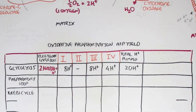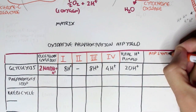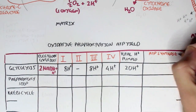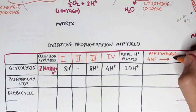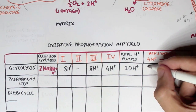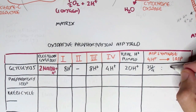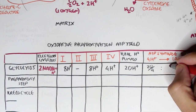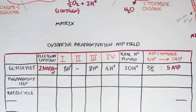So now we have 20 hydrogen ions in the intermembrane space from two NADHs, the electron carriers. If we put this through the ATP synthase, where four hydrogen ions will give us one ATP, this would mean that 20 hydrogen ions will produce five ATP.